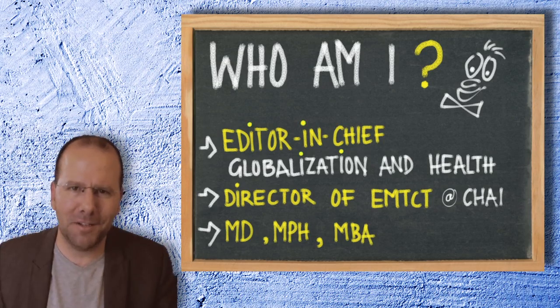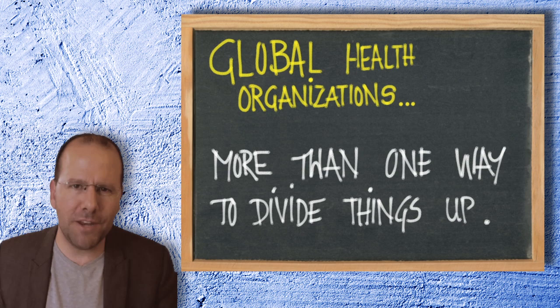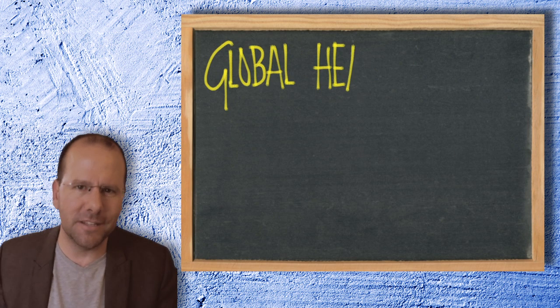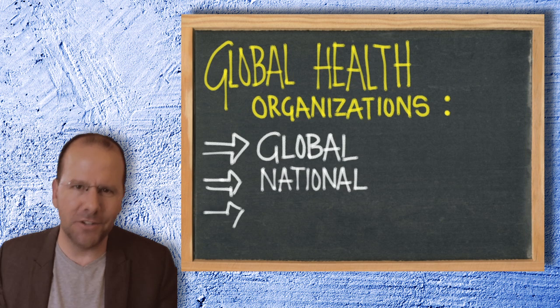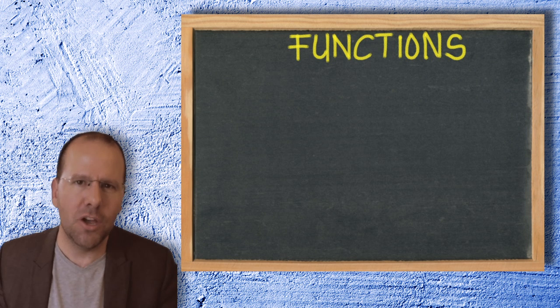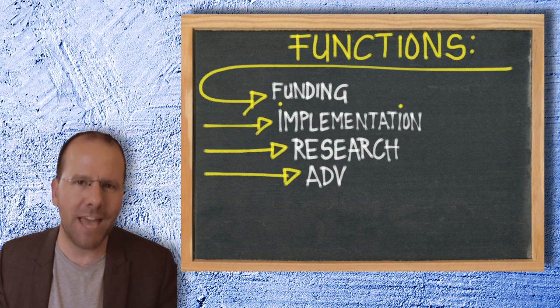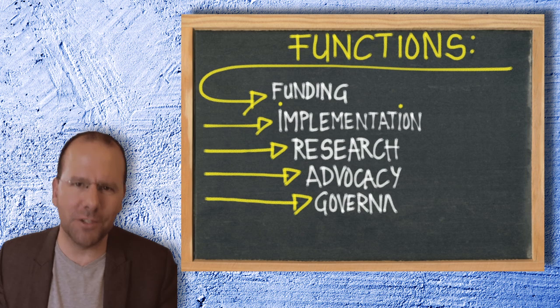When thinking about global health organizations, there's more than one way to divide things up. One way to do it is to think about it in terms of is this organization global, national, sub-national, or local. I think for practical purposes it's actually easier to think of the organizations in terms of their function. So are they providing funding, do they do implementation work, do they do research work, do they do advocacy work, do they do governance work, do they do product development work, do they do clinical and community work?